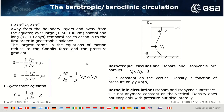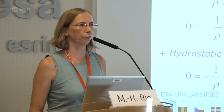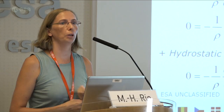A third expression from the geostrophic approximation is the thermal wind equation, which says that geostrophic horizontal velocities at one level can be expressed as a geostrophic velocity at a reference level plus an integral of the horizontal variation of density with depth. This thermal wind equation we will use in particular on Friday when talking about inferring the 3D ocean circulation from observation.